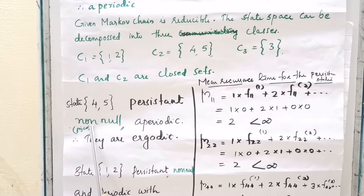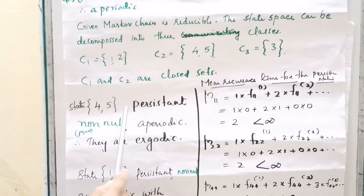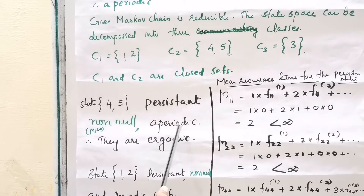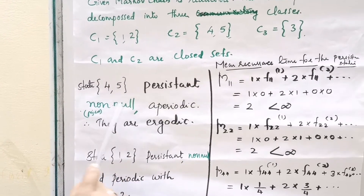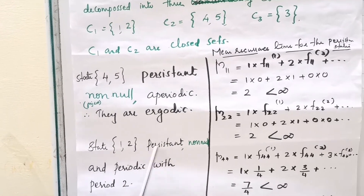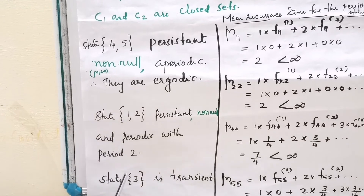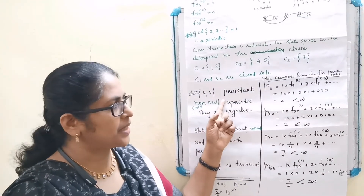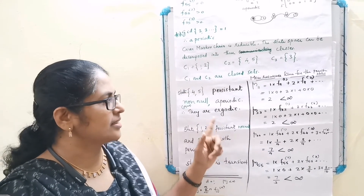States 4 and 5 are persistent, non-null, and aperiodic — that is, ergodic. Persistent means Fjj* equal to 1. Non-null means the mean recurrence time μj is finite. Aperiodic means periodicity D equal to 1. States 1 and 2 are persistent, non-null, but periodic with period 2. State 3 is transient. I hope you understood the concepts of persistent state, transient state, periodic state, non-null state, and ergodic state. Thank you.